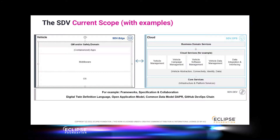Looking at the content we want to deliver, the software-defined vehicle has three different components. On the one hand we have the SDV Edge — that's the part in the vehicle where we run our embedded software. Here we have components like operating system, middleware, or also applications on top of that.